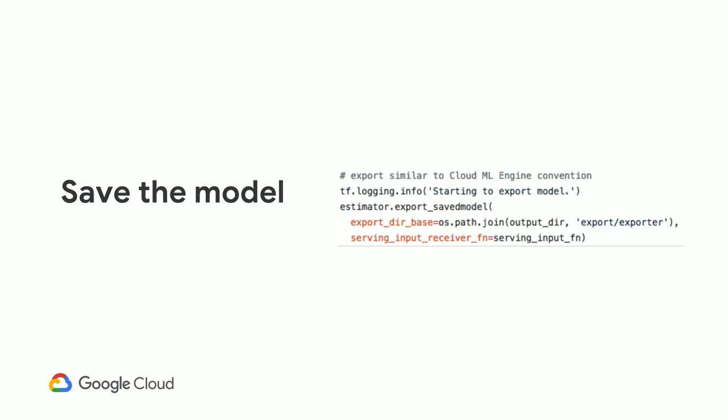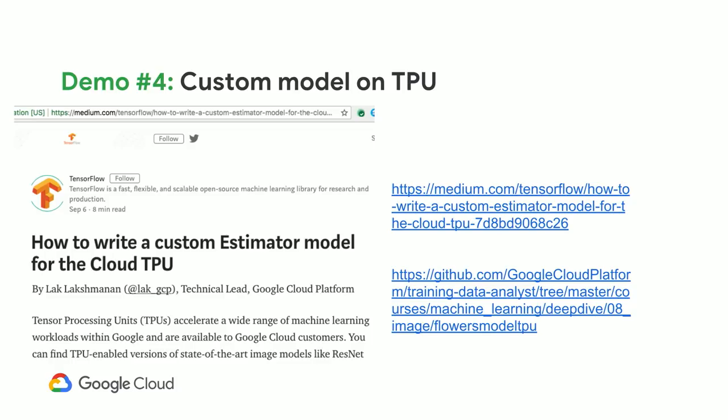Create a TPU Estimator instead of a regular Estimator spec. Find the TPU with a cluster resolver, then train and evaluate the way you normally do, keeping in mind that some functions execute on the TPU and some don't. Input and output are not on the TPU; all the matrix math is. There is a TPU profiler that tells you what fraction of functions are optimized for the TPU — we try to shoot for about 70%. The more you move preprocessing into the input function and leave your model function pristine, the higher that fraction gets. When you save the model, it's a normal model exportable for CPU, GPU, or TPU serving. All these steps are explained in the blog post and GitHub repo.